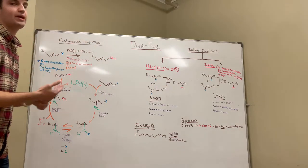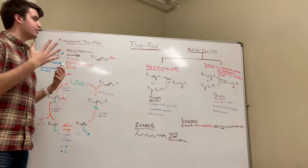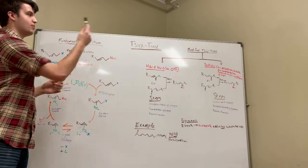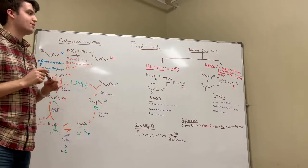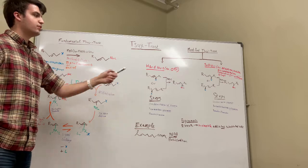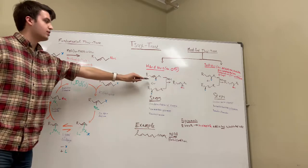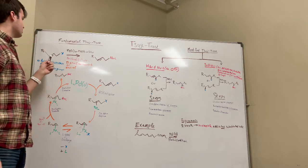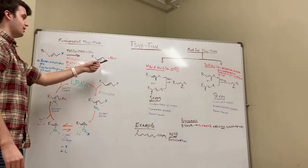Now, these are the two main ways you're going to see the Tsuji-Trost appear in literature and problems. And so, if you have a soft nucleophile, it's going to be a modified Tsuji-Trost, or the fundamental Tsuji-Trost. And if you have a hard nucleophile, it'll be the modified Tsuji-Trost. And what you can look for is whether or not the position gets inverted, and then with fundamental, there's not usually an R2 group, there's just this leaving group.